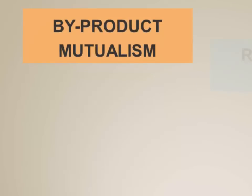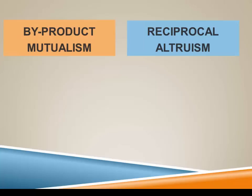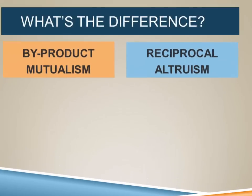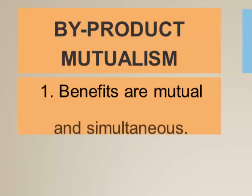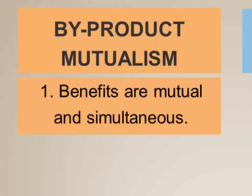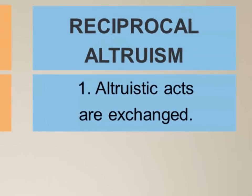So what is byproduct mutualism and how does it differ from reciprocal altruism? In byproduct mutualism the benefits are mutual and simultaneous. It's not the case that the clown fish performs an act to benefit the sea anemone and then the sea anemone reciprocates. They're both receiving benefits simultaneously. This is quite different from reciprocal altruism, where acts of altruism are exchanged and one organism harms its reproductive fitness to benefit another.